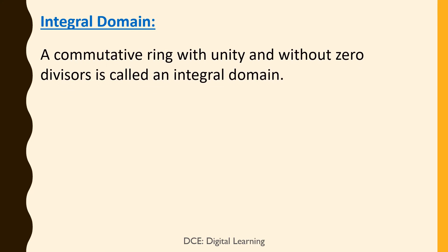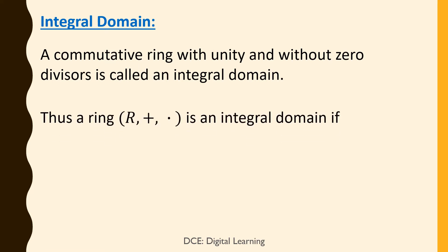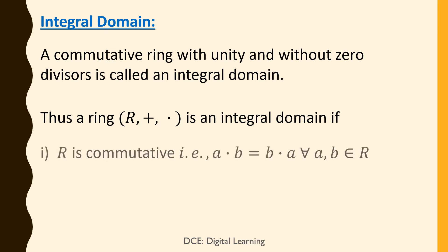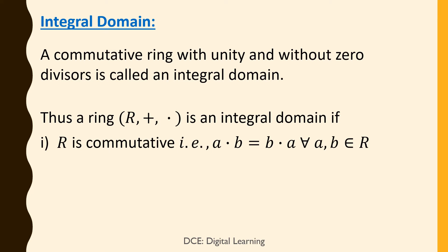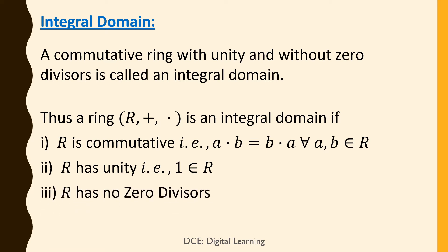Definition of Integral Domain. A commutative ring with unity and without zero divisors is called an integral domain. Thus, a ring R (plus, dot) is an integral domain if: R is commutative, i.e., a·b = b·a for all a, b belonging to R; R has unity, i.e., 1 belongs to R; R has no zero divisors, i.e., a·b = 0 implies a = 0 or b = 0.